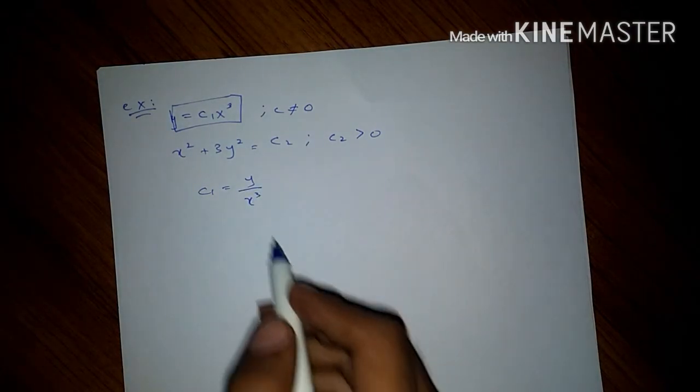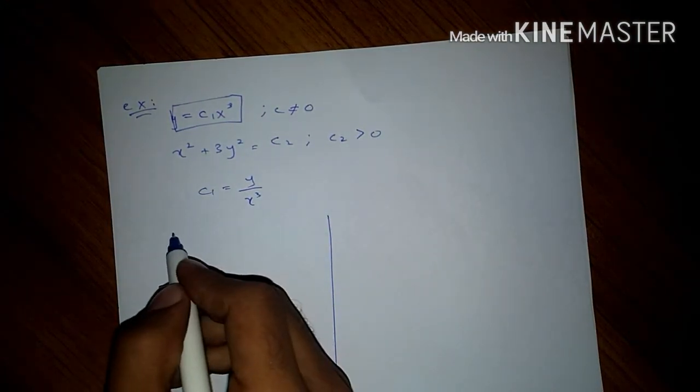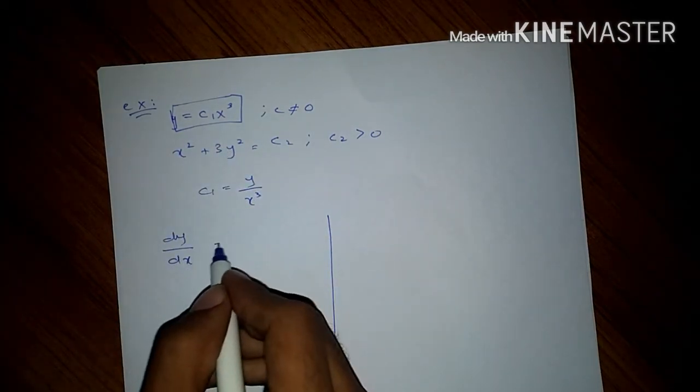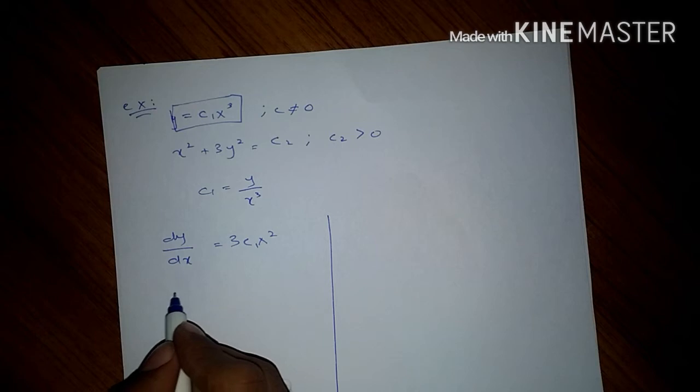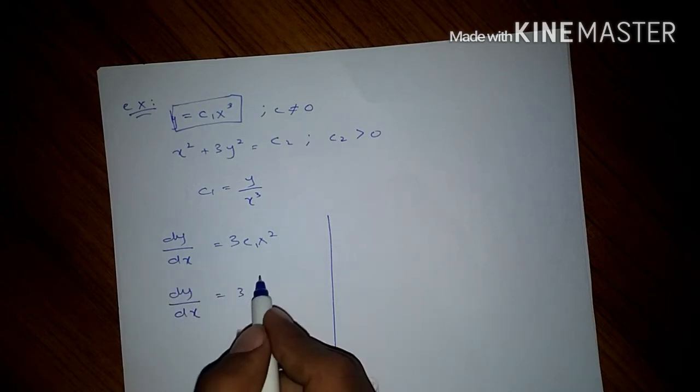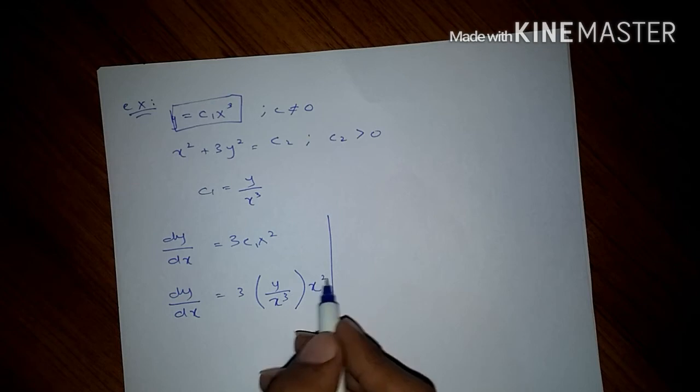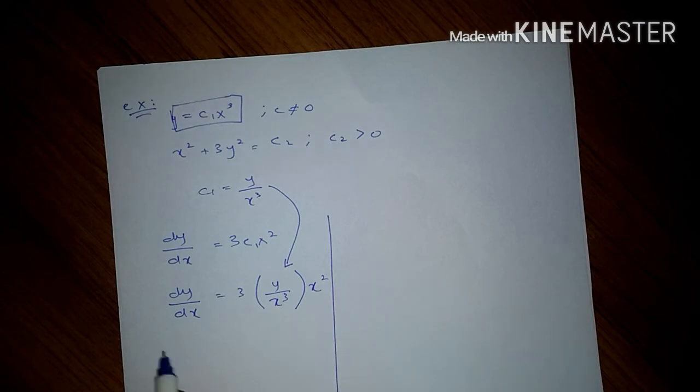Now we differentiate both equations. When we differentiate this we get dy/dx equals to 3 times c1 x². That is dy/dx = 3(y/x³)x², so dy/dx equals to 3y upon x.